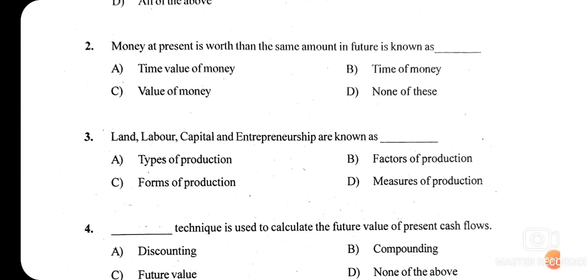Question three: land, labor, capital, and entrepreneurship are known as what? The right answer is option B — Factors of Production. These factors of production are the resources that are the building blocks of any country's economy. Land, labor, capital, and entrepreneurship are the resources that form the foundation of the economy.